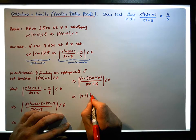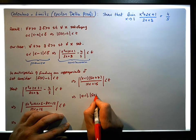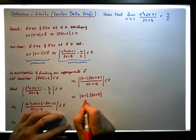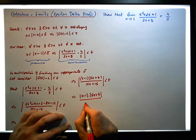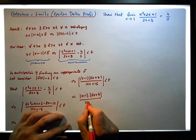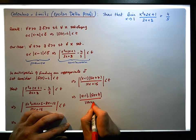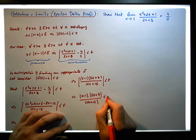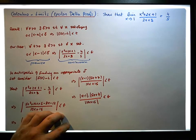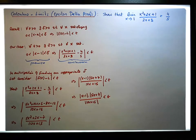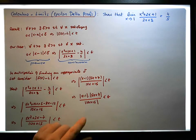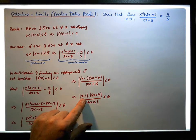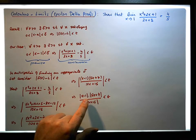The absolute value of 5x plus 7, all over the absolute value of 10x plus 15, is less than epsilon. So we're nearly there, though we've still got a little bit of work to do — we're nearly there.